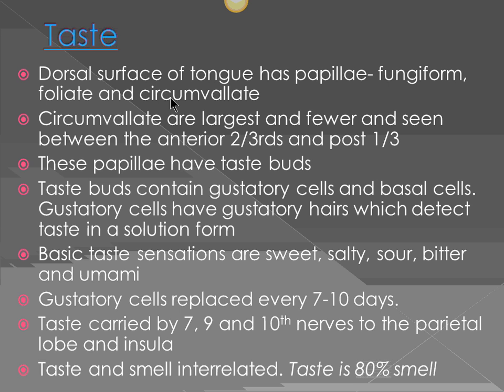We also have other papillae present on the surface of the tongue called filiform. These are spike-like and do not have taste buds. They are more for giving roughness to your tongue — like when you lick an ice cream cone, that's what these filiform papillae help with.